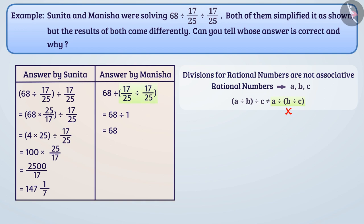Manisha has formed the wrong type of group due to which she has got the wrong answer. Rational numbers must be divided in given order only. Sunita must be knowing this. So she has got the correct answer.